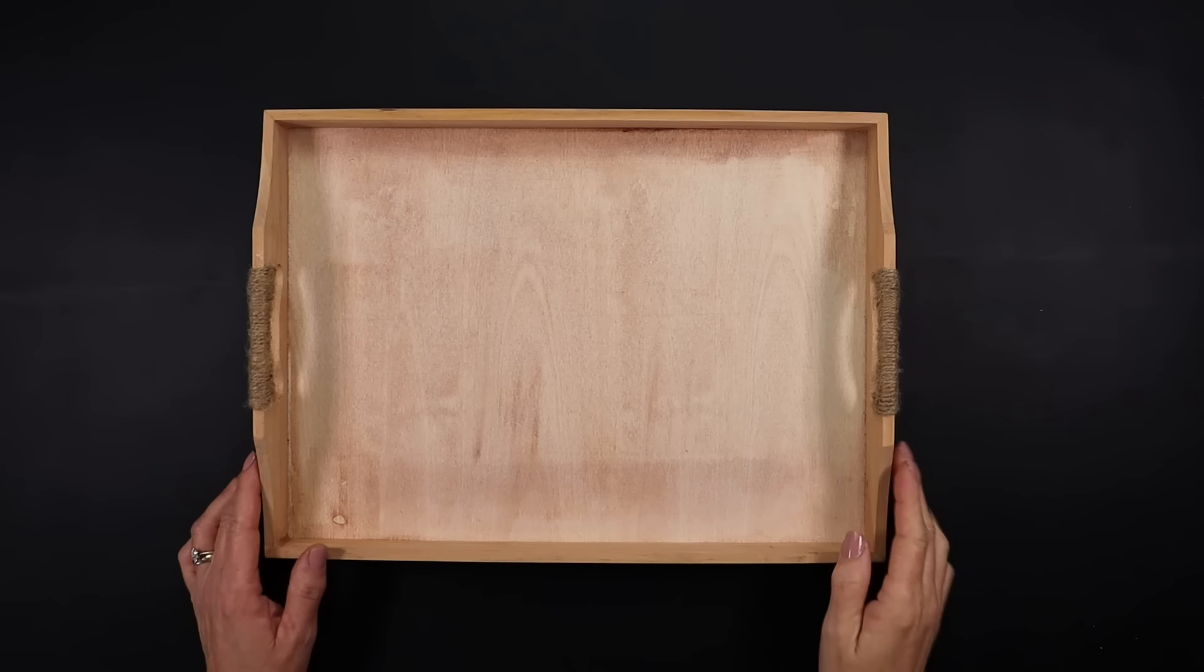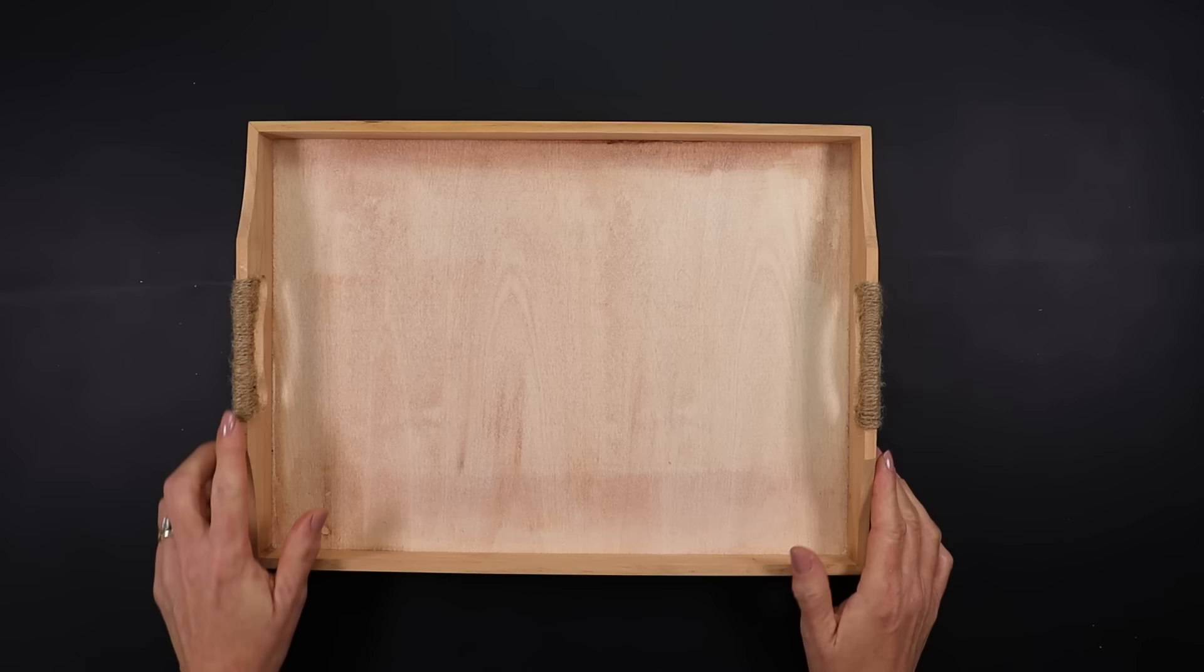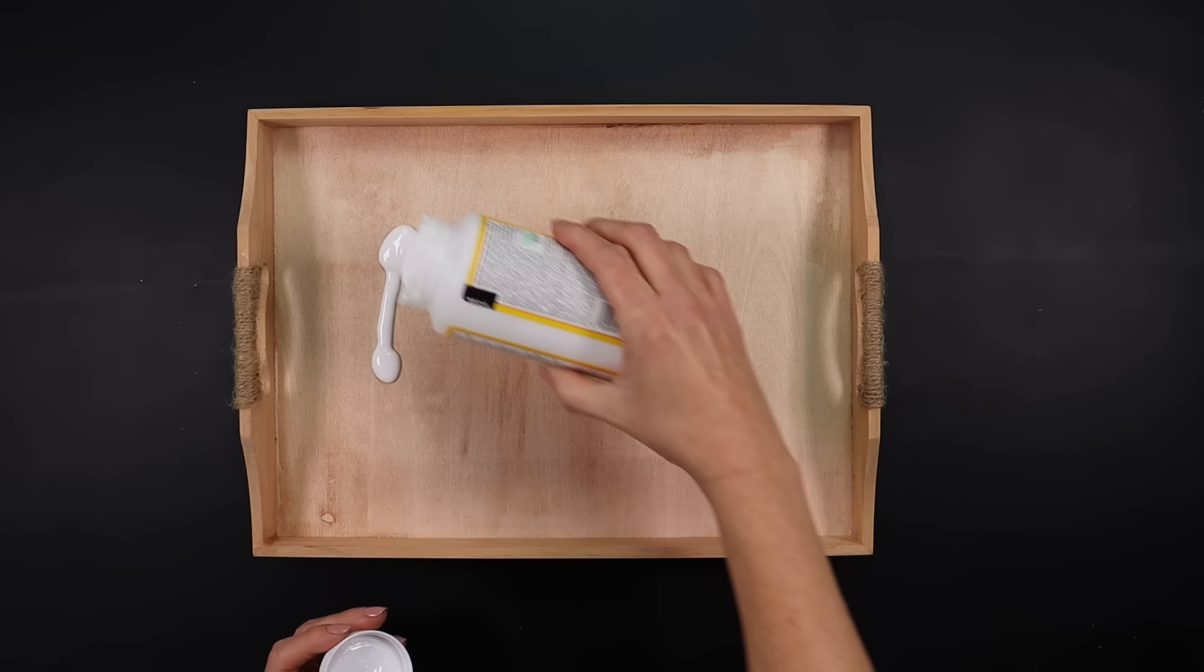For this project, we're using one of Dollar Tree's wooden trays. This comes in their plus section. I previously made a DIY with this, so I've already pre-stained it and wrapped the handles with twine. If you would like to see that video, I'll leave it in the cards up above. I'm going to apply a very generous amount of Mod Podge to the bottom of the tray.